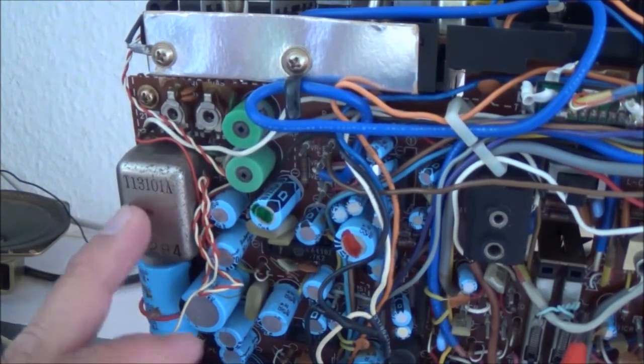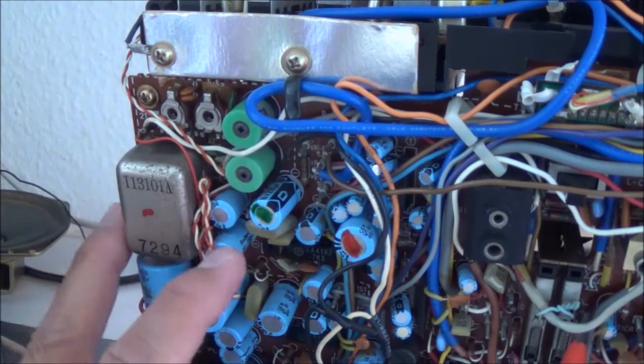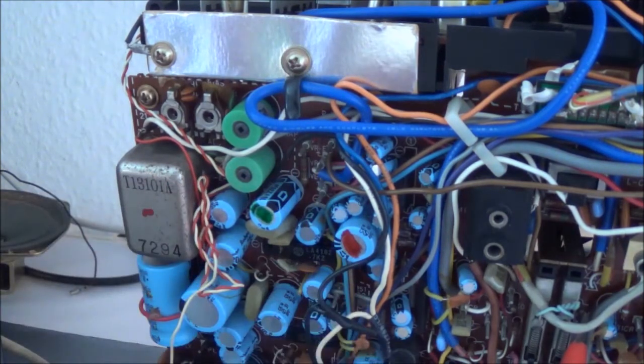I'm not sure whether I mentioned it already—this is the bias oscillator and you can see it's off nice in the corner here so it doesn't cause any interference with the rest of the circuitry.